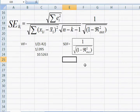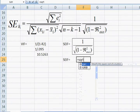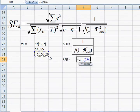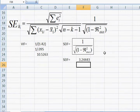You can do this the long way, or you can just take the square root. If you take the square root of 1 over 1 minus R-squared, that's the same as the square root of 1 divided by the square root of 1 minus R-squared. So you could just take the square root of what we got here. SEIF equals the square root of this 10.52, and so we get 3.244.